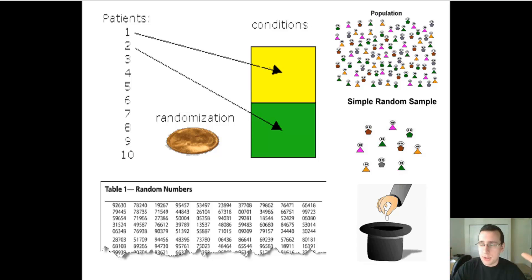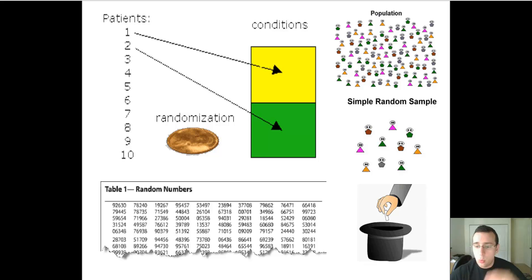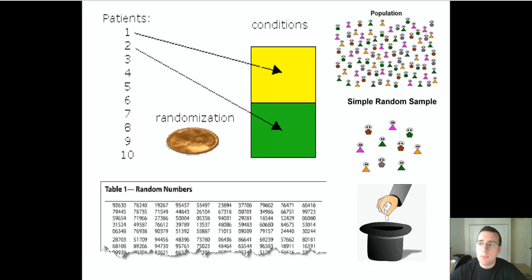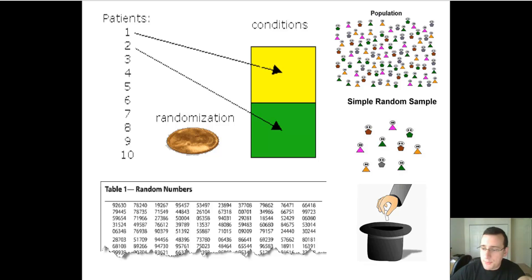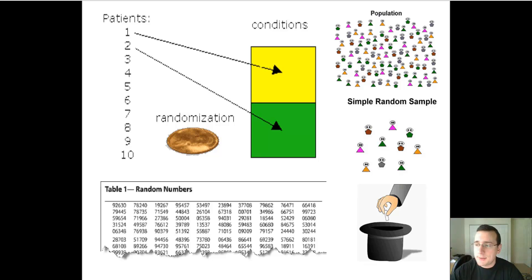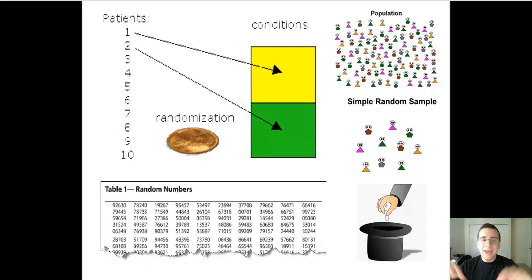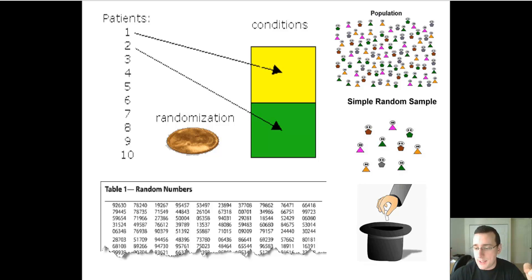So how do you get from an entire population to create groups? There are two types of sampling techniques: random probability sampling and non-probability sampling. Probability sampling attempts to remove bias to make sure that when you set up your groups, they're equivalent to each other, and that all people in the population have an equal chance of being selected to any one of the groups in the experiment.